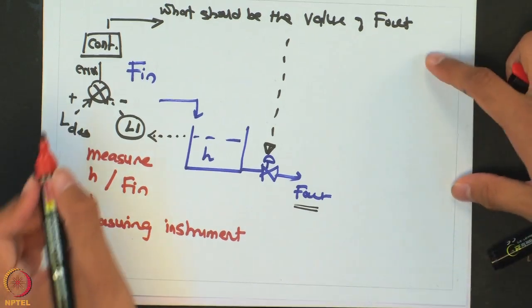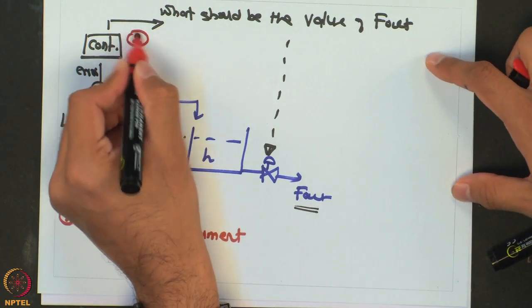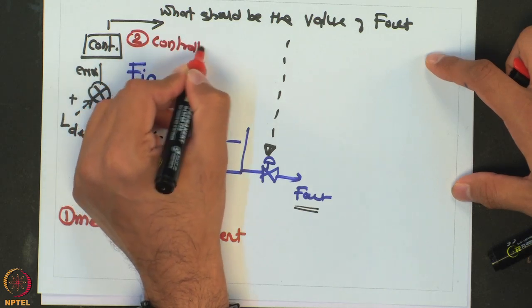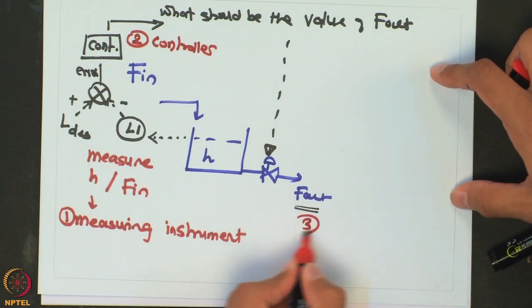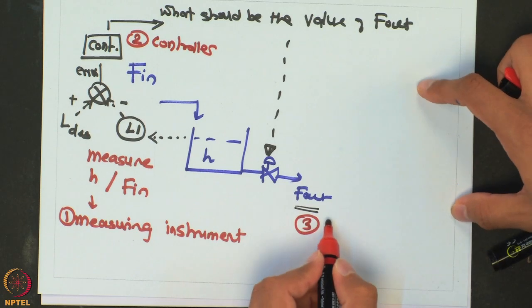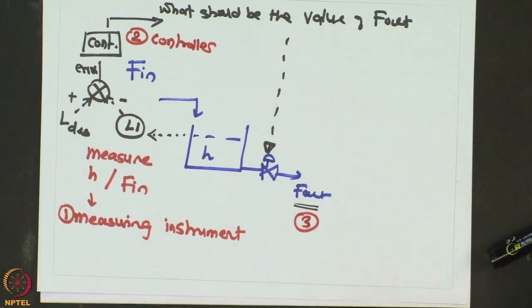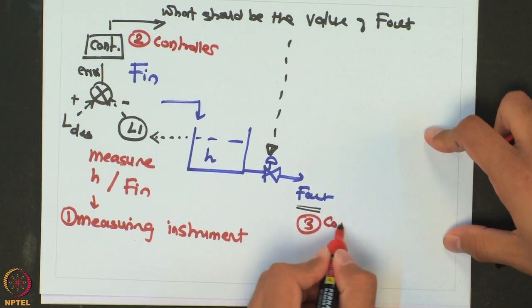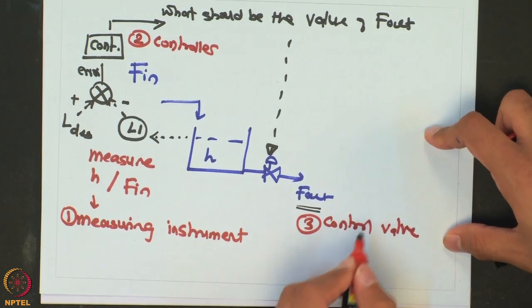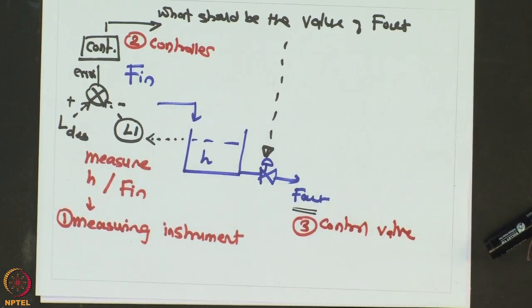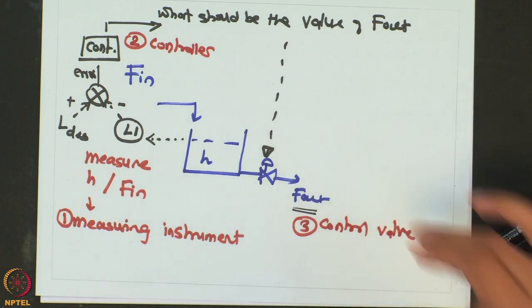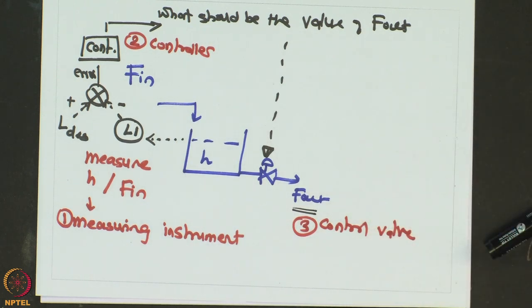The second piece of hardware was the controller and the third thing is the control valve which is going to implement the action given by the controller. These three are the elements of the control system.